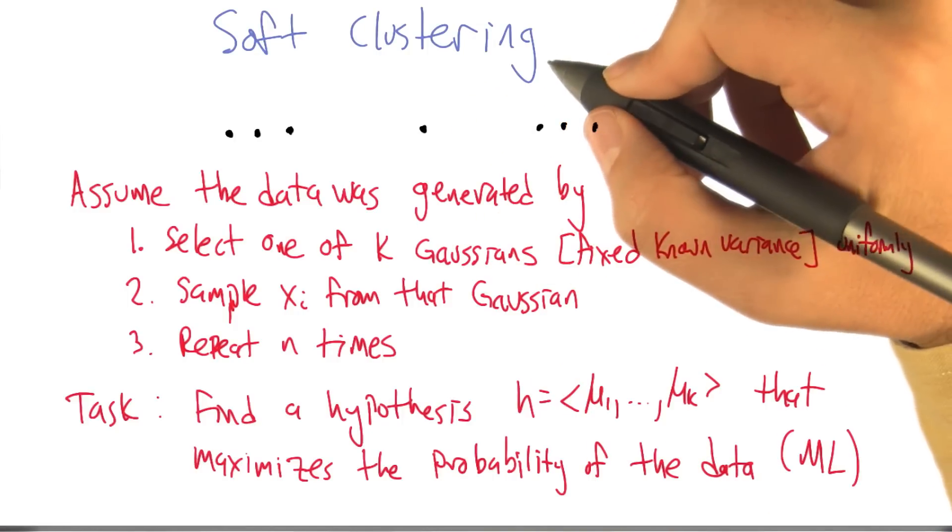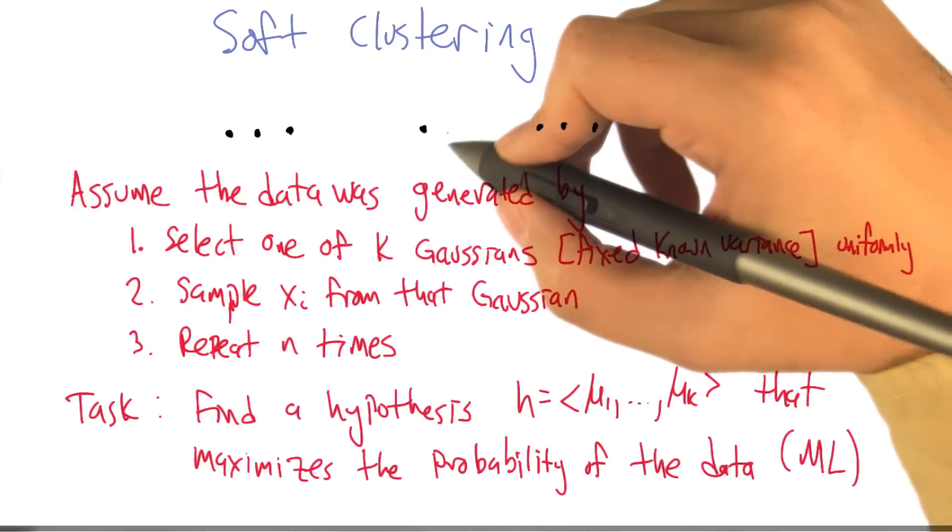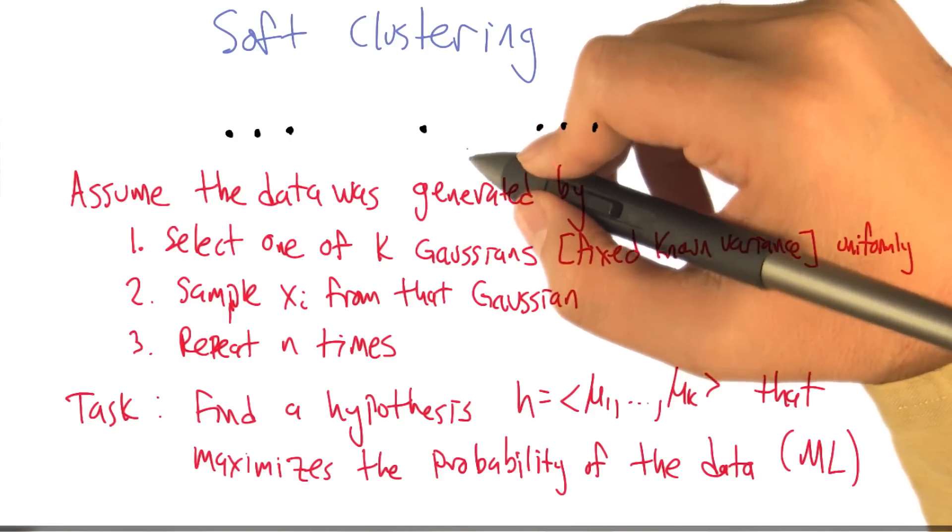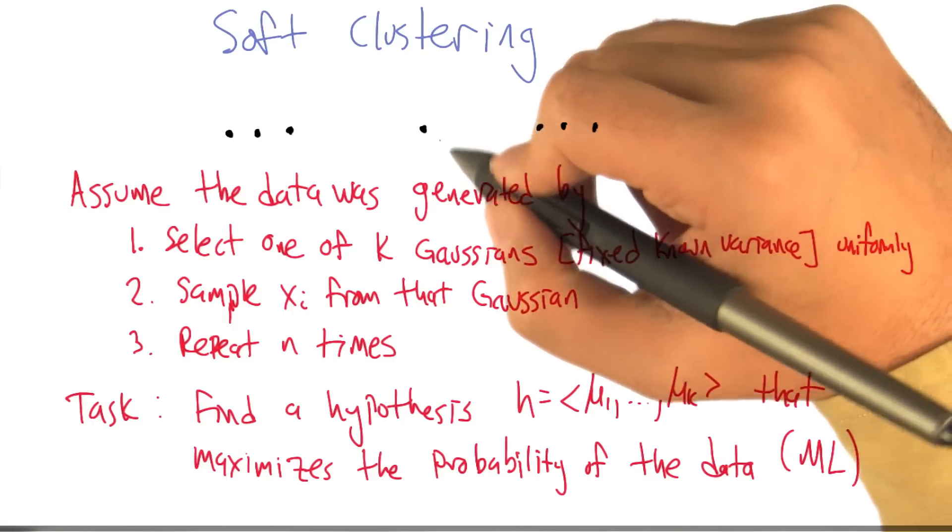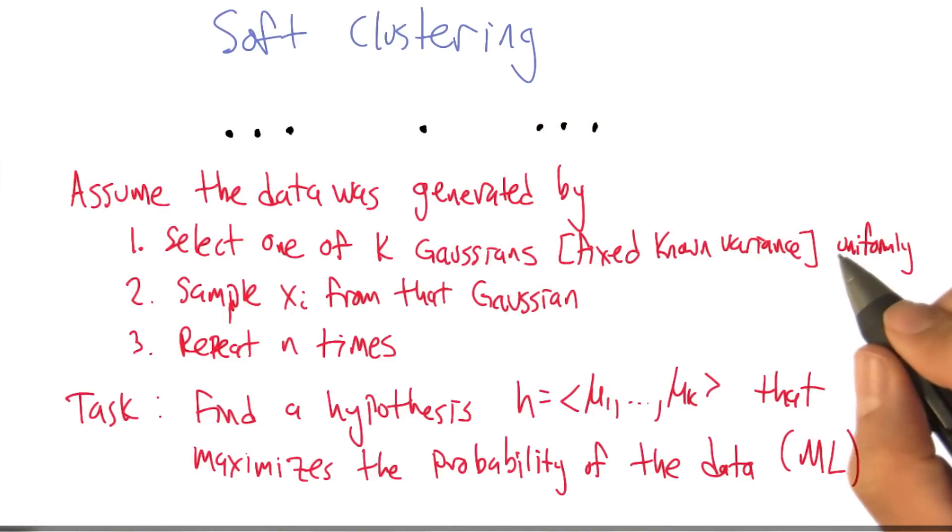So to do soft clustering, we're going to use a similar trick to what we've used in some of the other lectures, which is to lean on probability theory. So that now points, instead of coming from one cluster or another cluster, can be probabilistically from one of multiple possible clusters. Does that seem like a good idea?